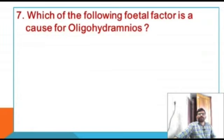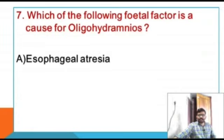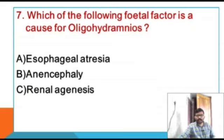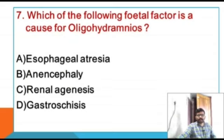Next question: which of the following fetal factors is a cause for oligohydramnios? Options: esophageal atresia, anencephaly, renal agenesis, gastroschisis.